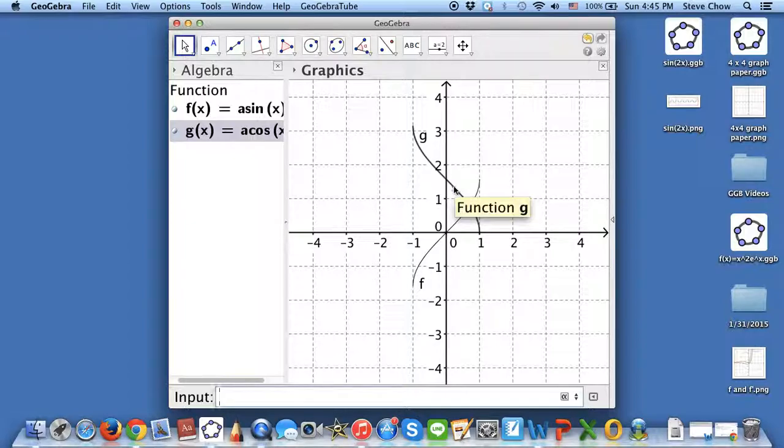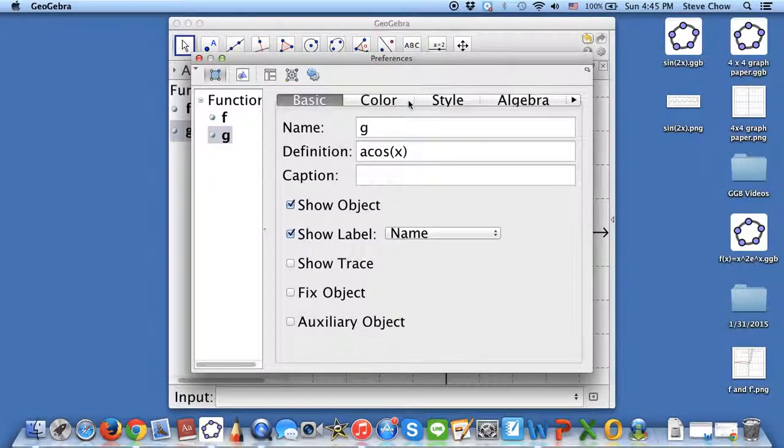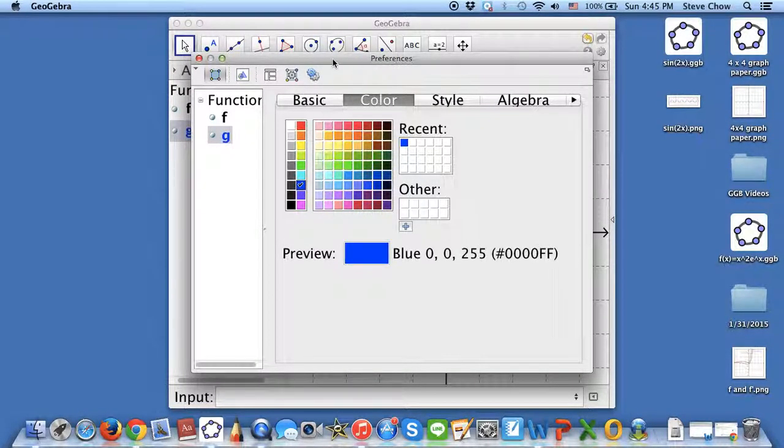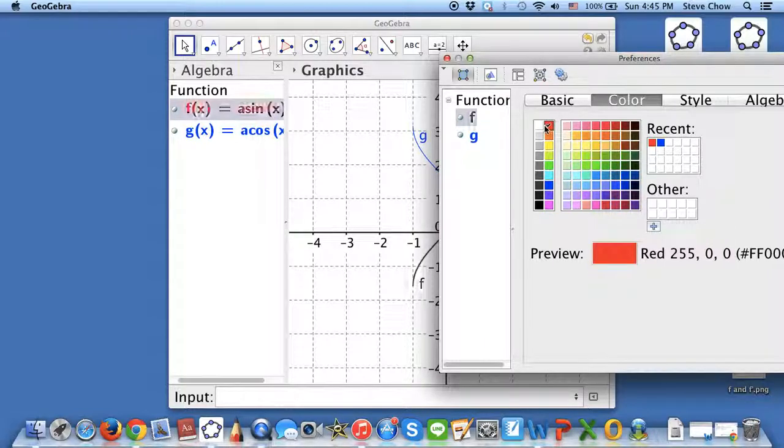And to make a distinction, once again, you can double-click on this and make this arc sine blue. For example, color, let's say, blue, and the arc cosine, let's say, make it red.